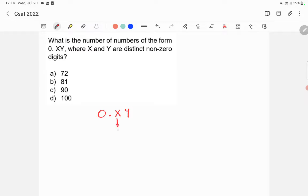So x can be 1, right? 2, because it is distinct and non-zero. So we cannot start with 0. So x can be 1, 2, 3, etc, etc till 9.